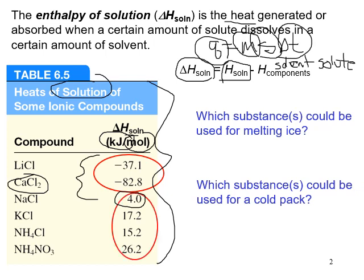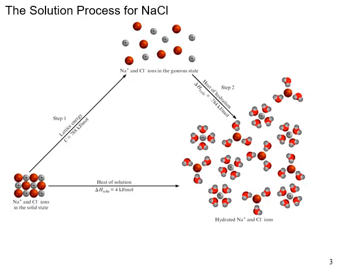For a cold pack, you would use any one of these endothermic substances whose delta H values are positive. When something dissolves, you have to think about how and why. If we have sodium chloride solid and put it in water, it dissolves and makes sodium chloride aqueous.